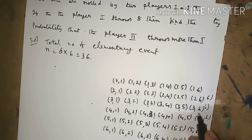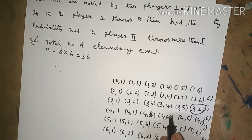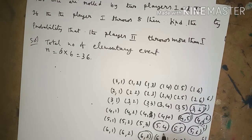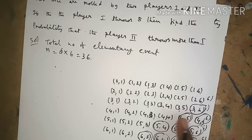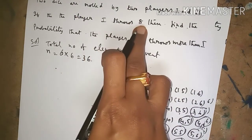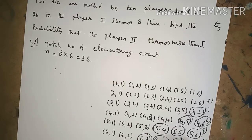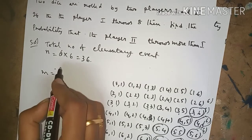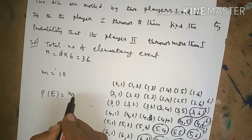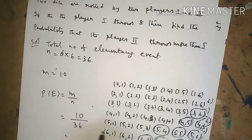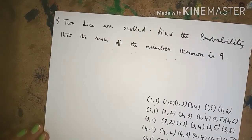More than 8 means the sum could be 9, 10, 11, or 12. Outcomes summing to 9 or more: (3,6), (4,5), (4,6), (5,4), (5,5), (5,6), (6,3), (6,4), (6,5), (6,6). That gives m equals 10. Therefore P(E) equals m by n, which is 10 by 36. Simplify for the final answer.